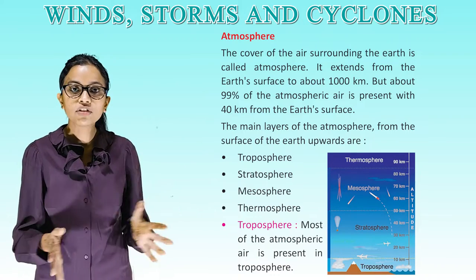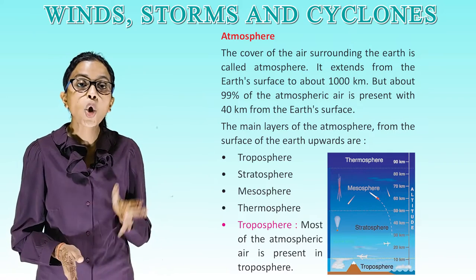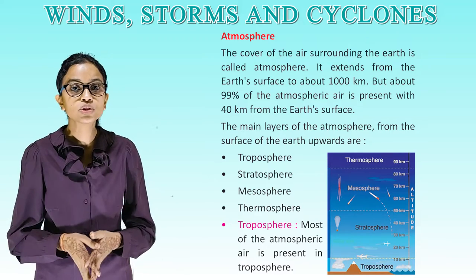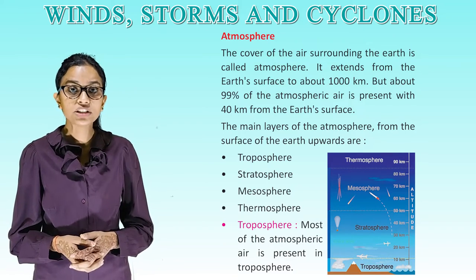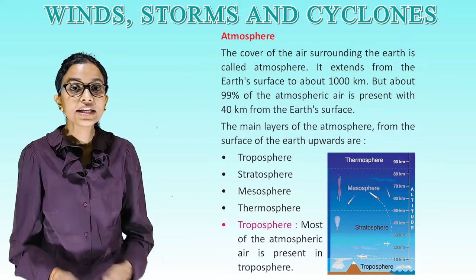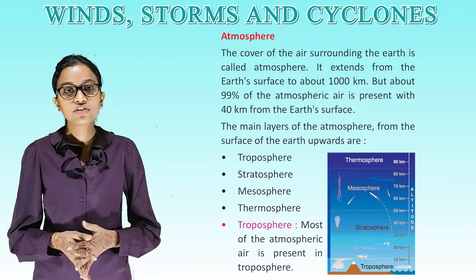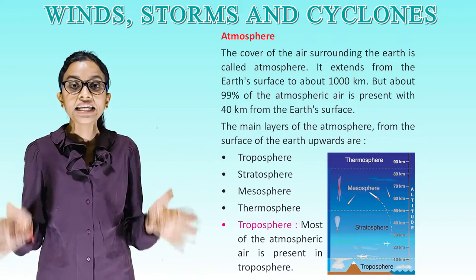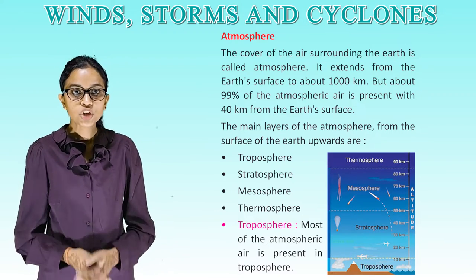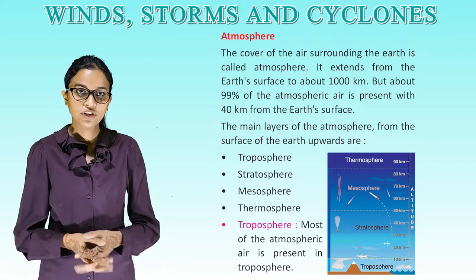Atmosphere: The cover of air surrounding the earth is called atmosphere. It extends from the earth's surface to about 1000 km. But about 99% of the atmospheric air is present within 40 km from the earth's surface. The main layers of the atmosphere from the surface of the earth upwards are: troposphere, stratosphere, mesosphere, and thermosphere.